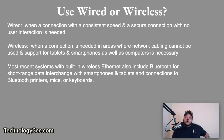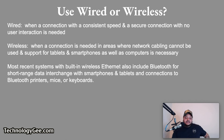When to use wired versus wireless Ethernet: use wired when a connection with consistent speed and security with no user interaction is needed. Use wireless when a connection is needed in areas where network cabling cannot be used, and when support for tablets, smartphones, as well as computers is necessary. Most recent systems with built-in wireless Ethernet also include Bluetooth for short-range data interchange with smartphones and tablets, and connections to Bluetooth printers, mice, or keyboards.